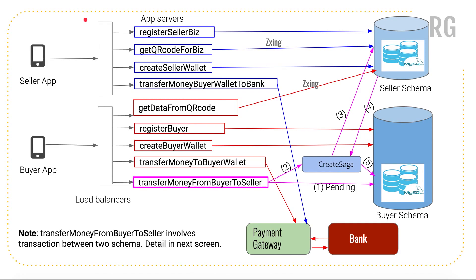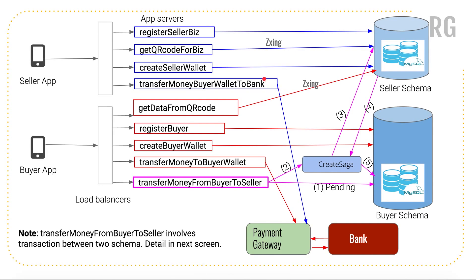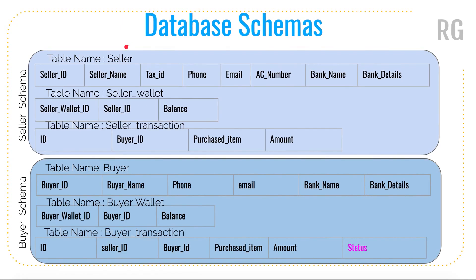What you see on screen is a minimal version of the system design diagram for transferring money using QR code. There are two sections: the seller side and the buyer side, each with their own app. You can see the number of services used for both seller and buyer, separate databases for each, and a payment gateway connecting to the bank. Under the seller app, there is a service called 'Register Seller Business' where seller information gets stored into the seller table.